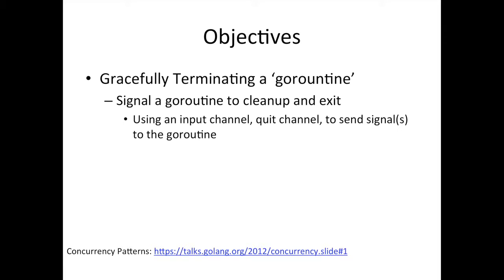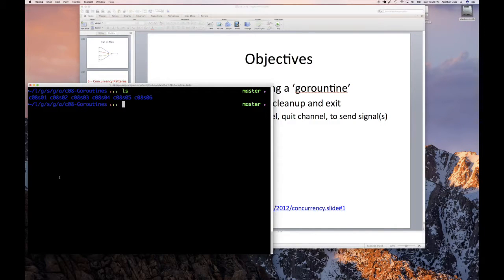We want to put a goroutine to clean up properly before it exits. What we're going to do is use an input channel — a quit channel — to signal to that goroutine. Once you have a channel to the goroutine, you can think of it as using it to communicate to that routine. In this example I'm just going to use it to send one value which signals exit, but you can certainly use your imagination. Enough talking, let's go look at the code.